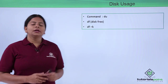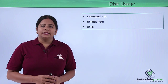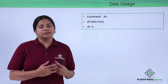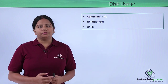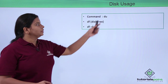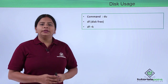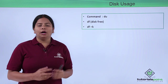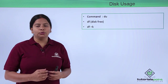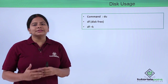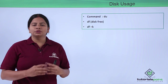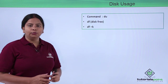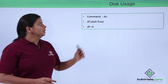First, if I have connected a disk and want to check what disk I have and what the used space is, I can use the command 'du'. The du command will show the hard disk connected, how many partitions you have, and the disk space remaining, so you can check the free space.